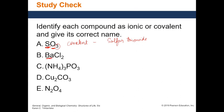For BaCl2: Ba is barium, found in group 2 of the periodic table — it's a metal on the left side. When the first element is a metal, the compound is ionic. It's a metal followed by a non-metal. To name ionic compounds: write the name of the metal — barium — followed by the anion name. Chlorine becomes 'chloride'. Since barium is a Type 1 metal with a predictable charge, no Roman numerals are needed. The name is 'barium chloride'.